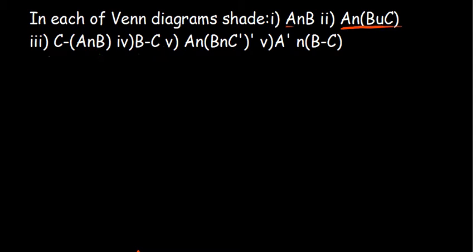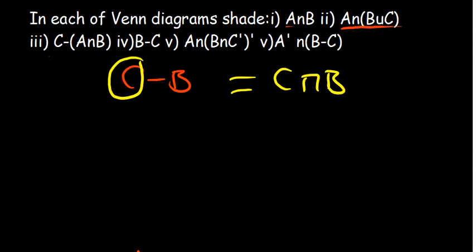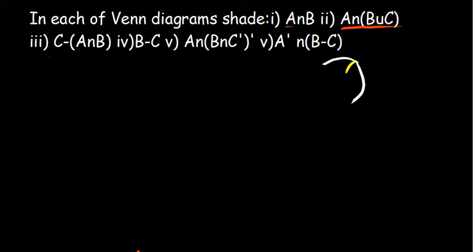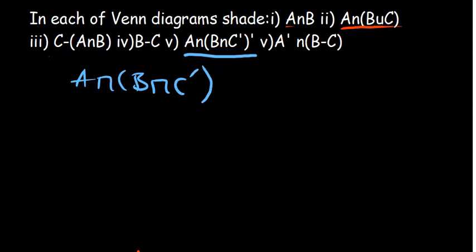What about if you said C minus B? When they say C minus B, it requires you to shade the region part of C excluding that which is part of B. Because it is basically C intersection B complement, meaning you're only interested in the region that is part of C and outside B. So we're on this one — A intersection with the complement of B intersection C complement.